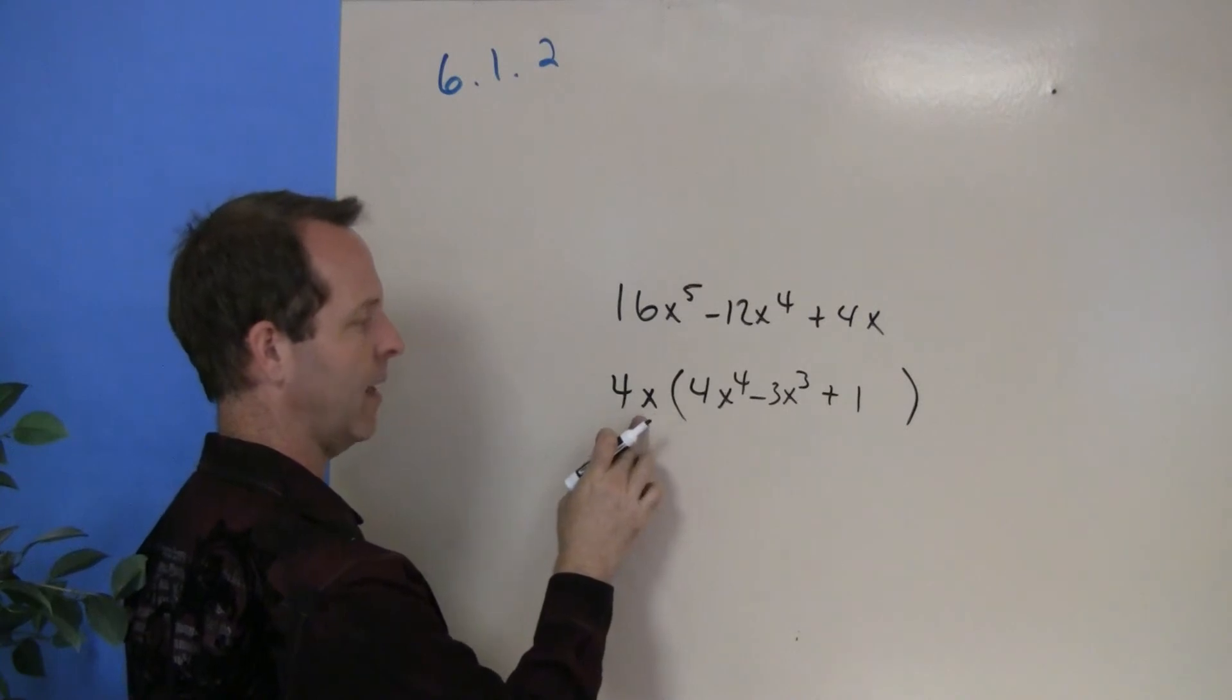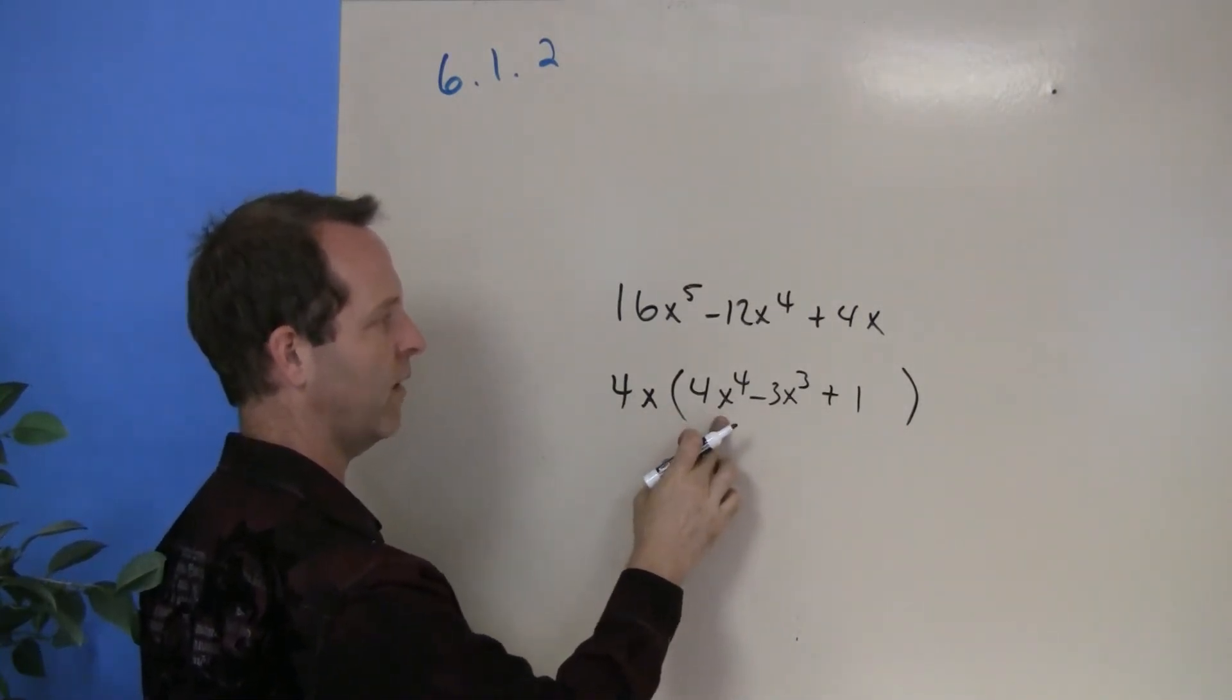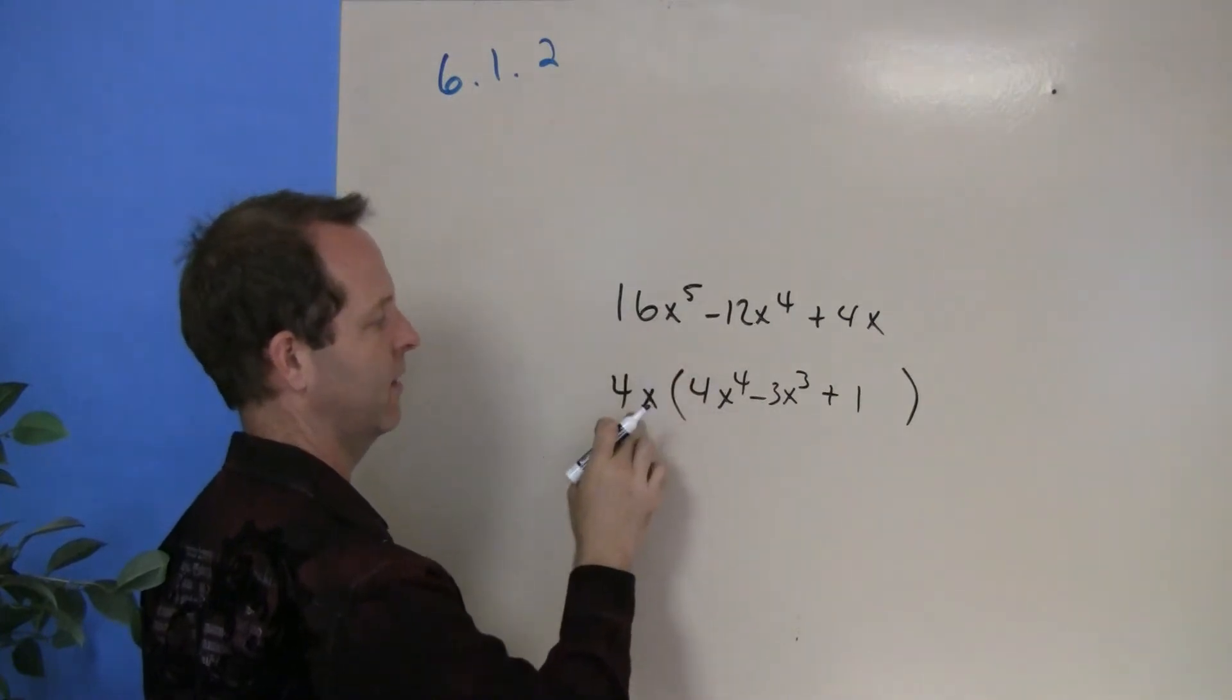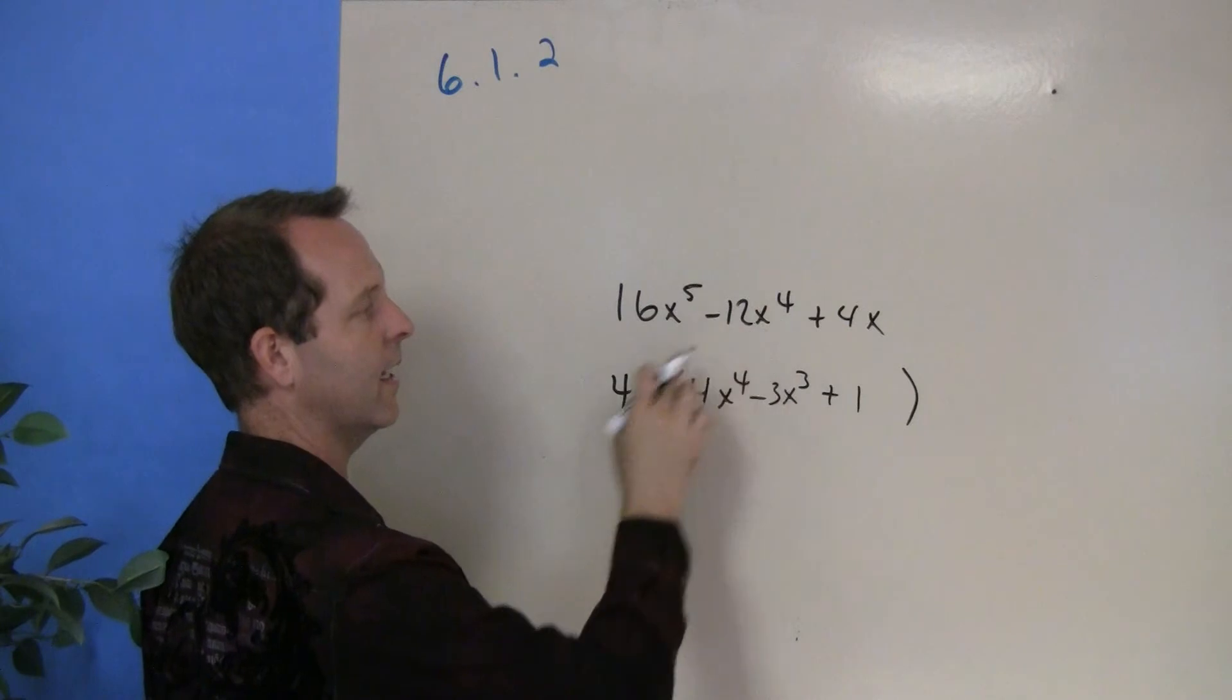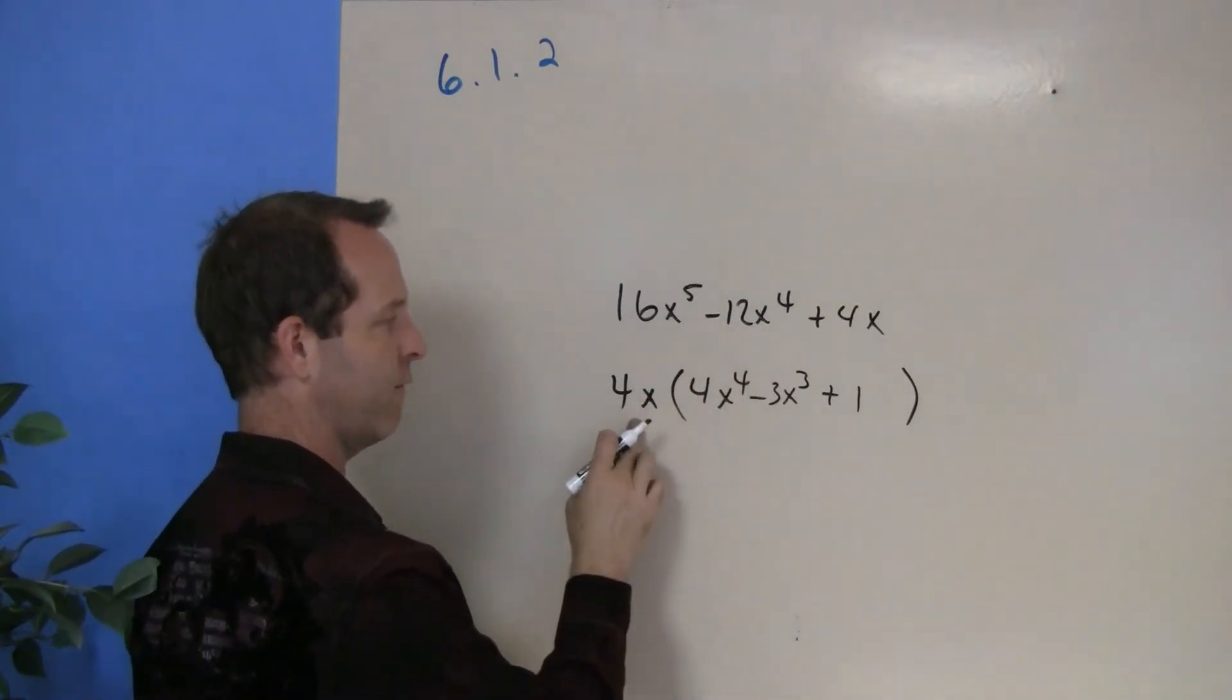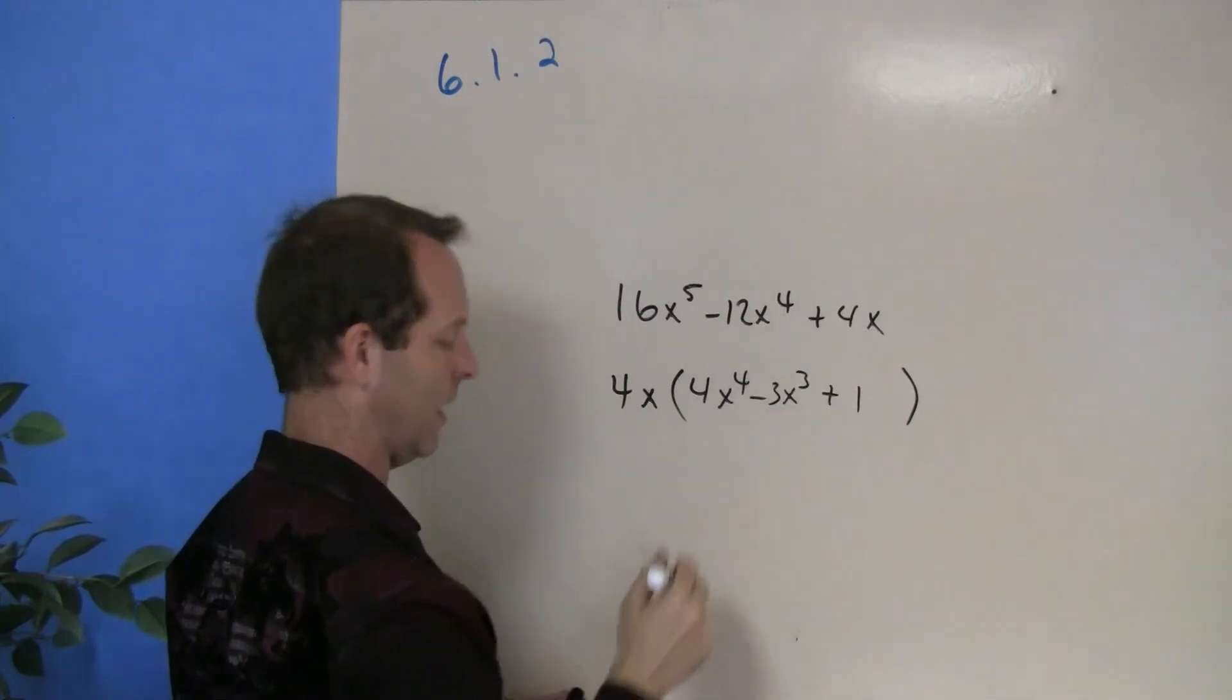If we go backwards, I can multiply this 4x all the way through. 4x times 4x⁴, 16x⁵. 4x times negative 3x³, negative 12x⁴. And then 4x times that 1 that we had to put in there, 4x times 1 equals 4x.